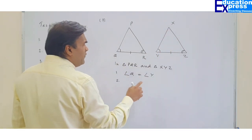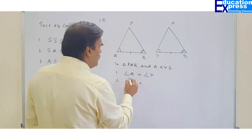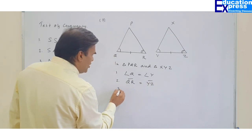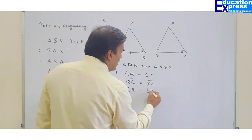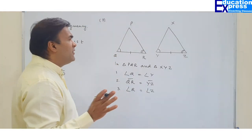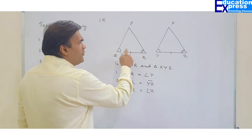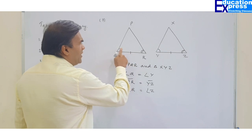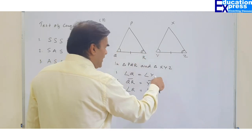You need to write the full name of the angle. Side QR is equal to side YZ. And the third one: angle R is equal to angle Z. Remember very clearly — order is very essential. After one angle, you cannot directly jump to another angle because in between there is a side. So the pattern is angle, side, angle. This is the Angle-Side-Angle test.